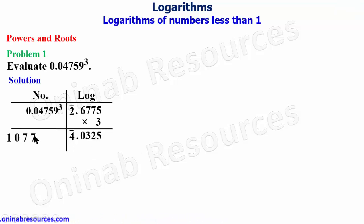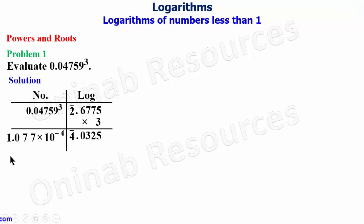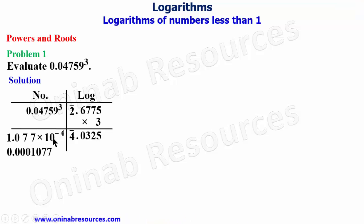The anti-logarithm table gives us 1077. We place our point immediately after the first digit and multiply by 10 raised to the power of the integer part, written as negative 4. This is the standard form of the solution. In ordinary form we have it as 0.0001077. If you have not watched our videos on standard form and ordinary form, please check the description section of this video on our YouTube channel.